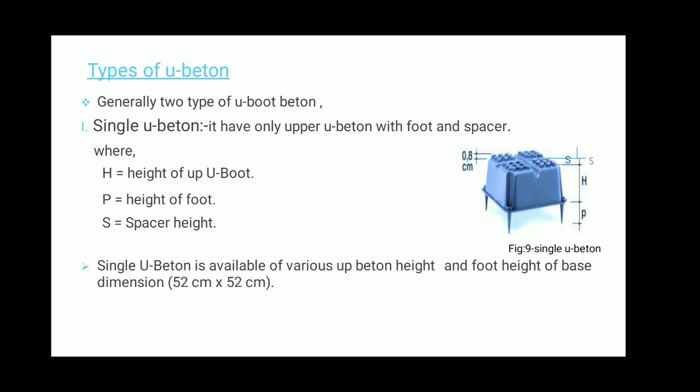There are two types of U-Boot. The first is single U-Boot and the second is double U-Boot. The single U-Boot has only an upper U-Boot with foot and spacer, where H is the height of the U-Boot, P is the height of its foot, and S is the space between each bar. Single U-Boot is available in various heights and foot heights with a base dimension of 52 by 52 centimeters.